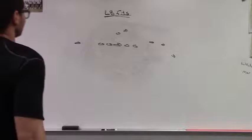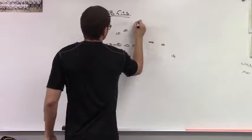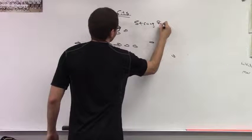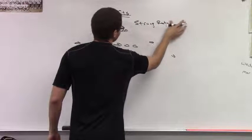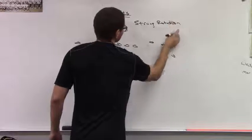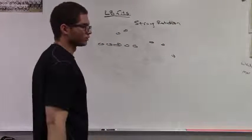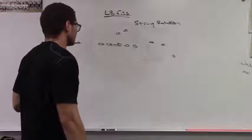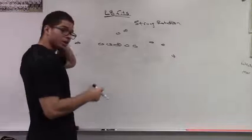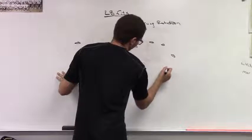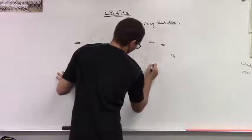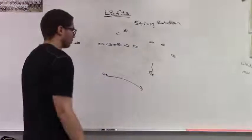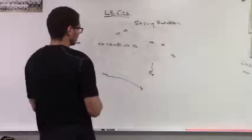We're still talking linebacker fits, but now we're going to talk strong side rotation coverages on the three receiver side. Cover one and cover three would be examples of these strong side rotation coverages. These are coverages where I've got a safety coming down to the strong side and a weak safety rolling up over the top to the strong side. We're rotating strong.